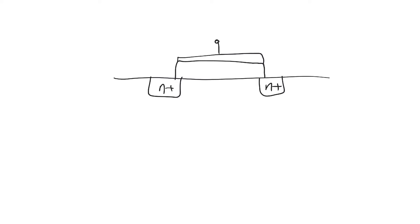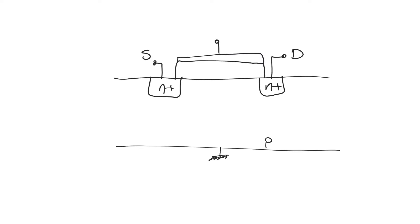We're talking about the case where there is no channel in the transistor, so there are reverse biased p-n junctions between the drain and the body and the source and the body. The first kind of current we have never taken into consideration is the reverse saturation current that flows in the reverse biased p-n junctions of the source to body and the drain to body.